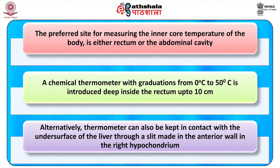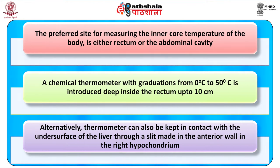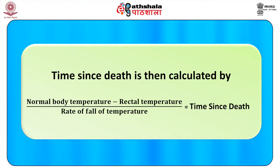The preferred site for measuring inner core temperature is the rectum or abdominal cavity, using a chemical thermometer graduated from 0 to 50°C, introduced deep into the rectum to about 10 cm. Alternatively, the thermometer can be placed in contact with the under surface of the liver through a slit in the anterior abdominal wall in the right hypochondrium. Environmental temperature is measured simultaneously. Time since death is calculated as: (normal body temperature − rectal body temperature) ÷ rate of fall of temperature per hour (0.4 to 0.6°C).